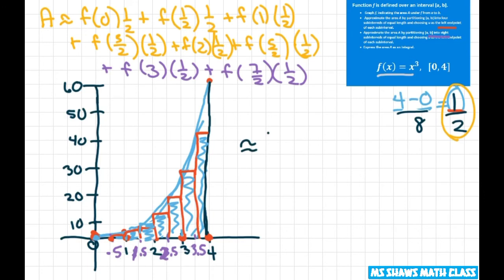This is going to be, factor that out. Then you can just evaluate all of these. So I factor out a 1 half. And that's going to give you 0. Plus 1 eighth. Plus 1. Plus 27 eighths. Plus 8. Plus 125 eighths. Plus 27.